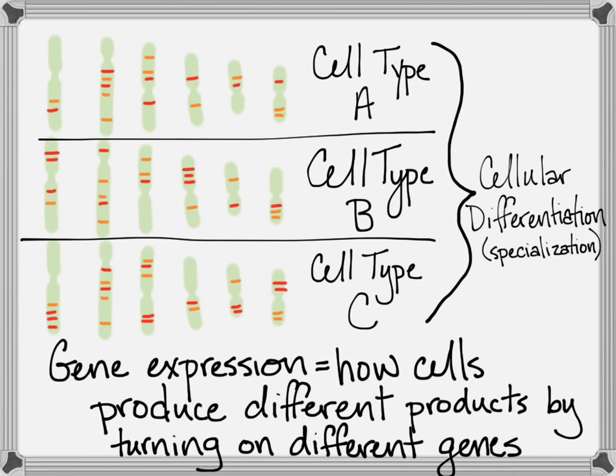Different chemical signals can create changes in gene expression that lead to differences in the body. And if the cluster of cells gets a sense of up and down and left and right, it can start to influence body symmetry and where certain tissues and cells develop.